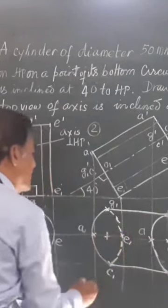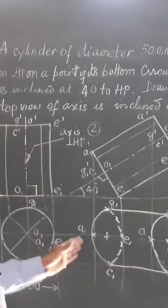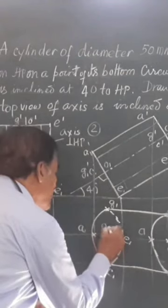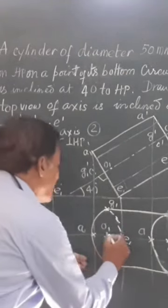This indicates that the bottom half of the cylinder is not visible in the top view. This point indicates O1, which is the axis of the solid.